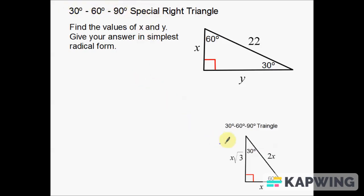I've provided a little cheat sheet for our 30, 60, and 90 triangles. X in this case is going to be the short side — the short leg. X root 3 is going to be the long leg, and then 2x is going to be the hypotenuse. So those are the specific values we need to know for our 30, 60, and 90 triangles.